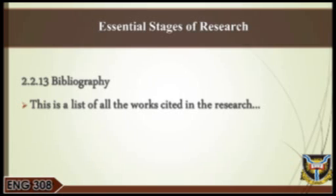Bibliography is a list of all the works cited in the research, ranging from books, articles in books or journals, dailies and periodicals, government publications, unpublished materials, internet materials, lecture notes, interviews, videos, and so on. A research writer makes copious use of works done by other scholars in or outside their field of study, especially in the literature review part. These cited works are then placed in alphabetical order by the author's surnames. There are many styles of documentation such as APA, MLA, University of Ibadan Manual, UIMS, the Chicago style, and so on, but the style to be adopted may usually be prescribed by the institution examining the research.